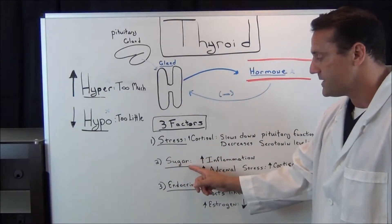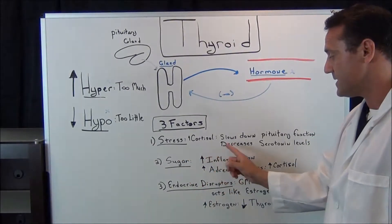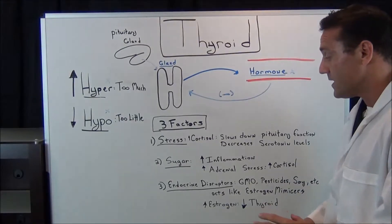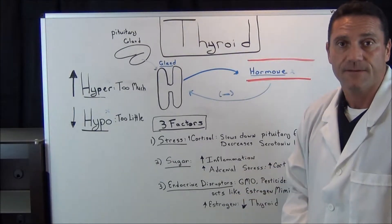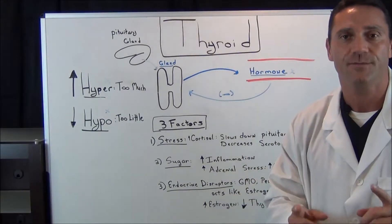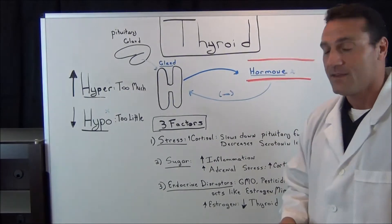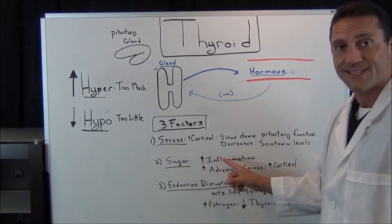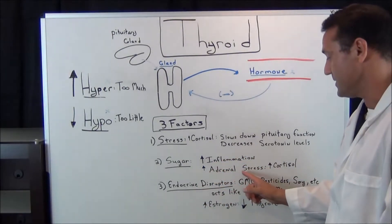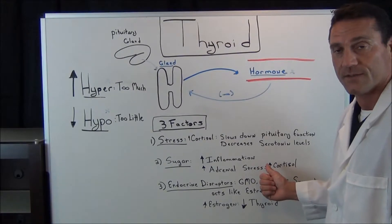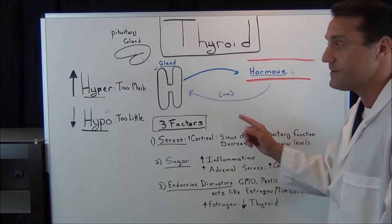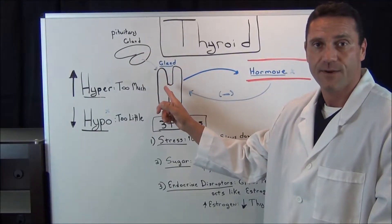Number two: sugar in the diet. Sugar in the diet increases inflammation. How much is too much sugar? I always tell my patients: if you have to ask how much is too much sugar, you're taking in too much sugar. Sugar increases inflammation throughout the whole body, and when you have increased inflammation, it increases adrenal gland activity — again, it's the cortisol release. When you have increased cortisol release, it slows down the pituitary function, which in turn slows down the thyroid gland.